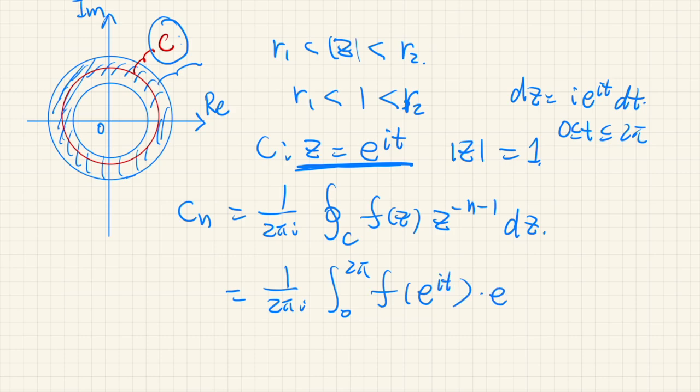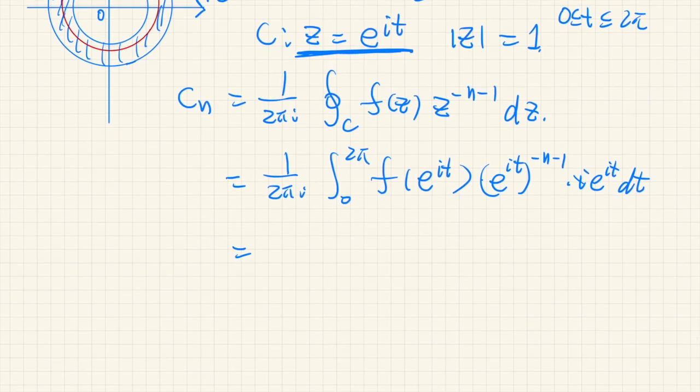And e to the power of it to the power of negative n negative 1, times i e to the power of it dt. So we can cancel this i and this i, integral from 0 to 2 pi, f of e to the power of it.